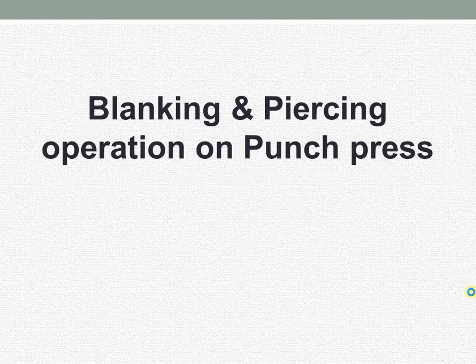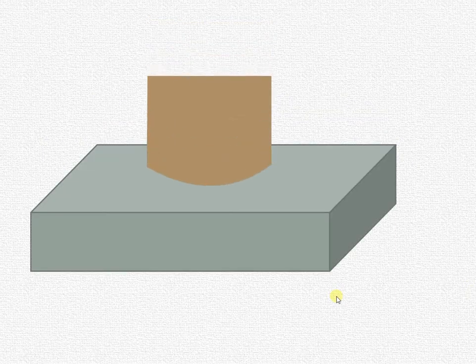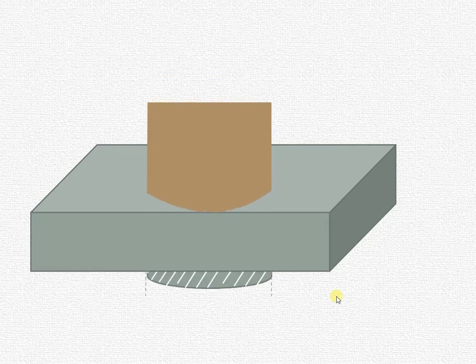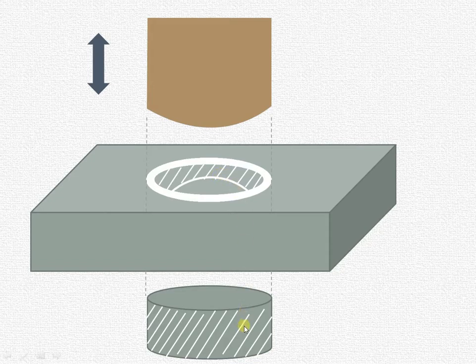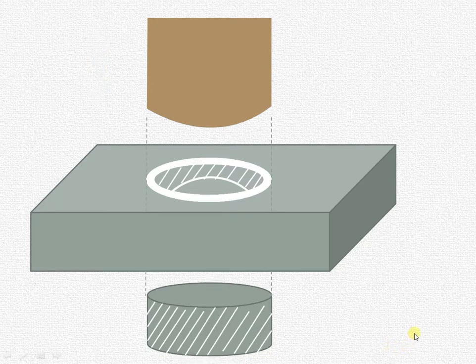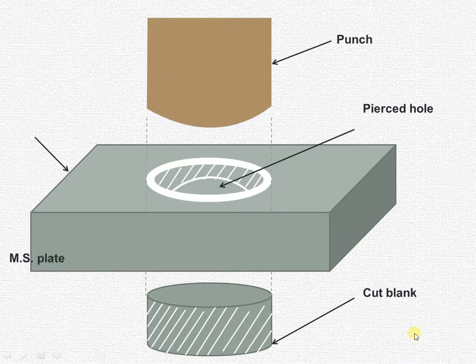Let us start to understand the blanking and piercing operation which is performed on a punching press machine and the various types of stresses which are induced during this particular operation. As the punch moves in the downward direction, it creates a hole inside this particular MS plate and the blank will fall down. The hole created is known as the pierced hole and this blank is known as the cut blank, and therefore this operation is known as blanking and piercing operation.